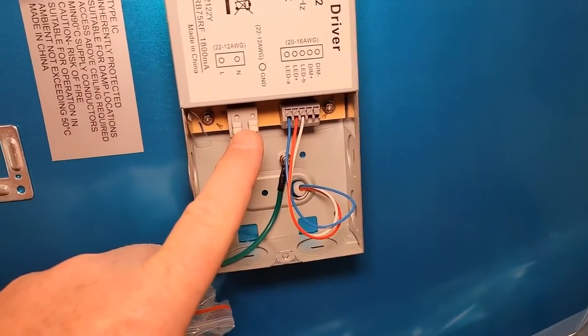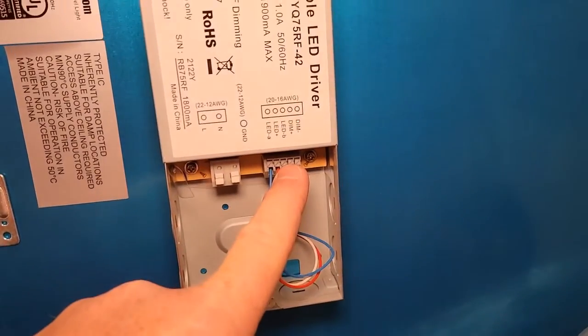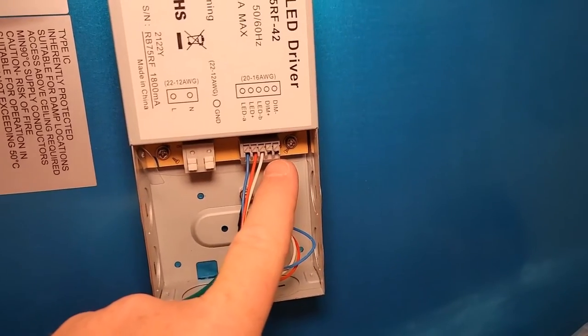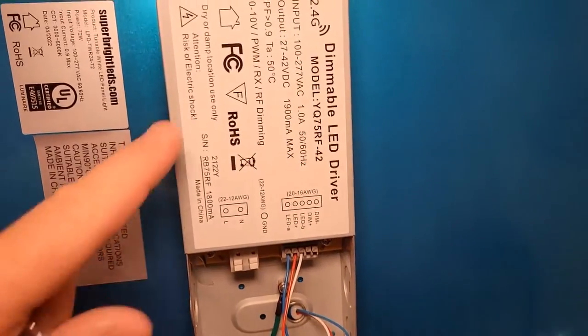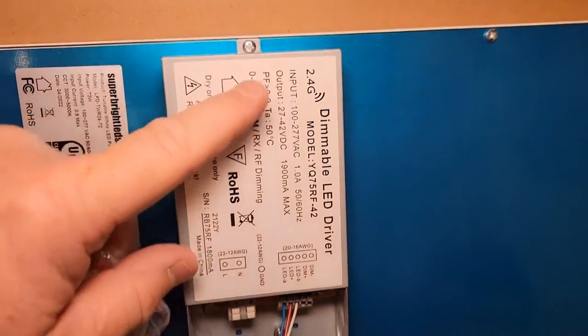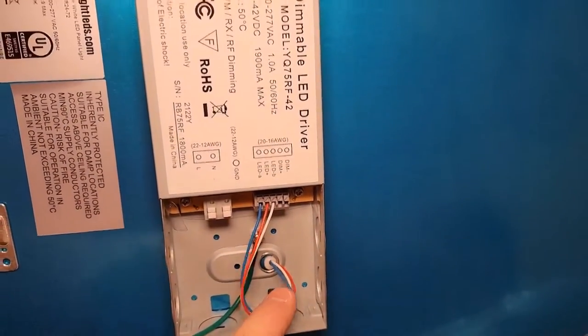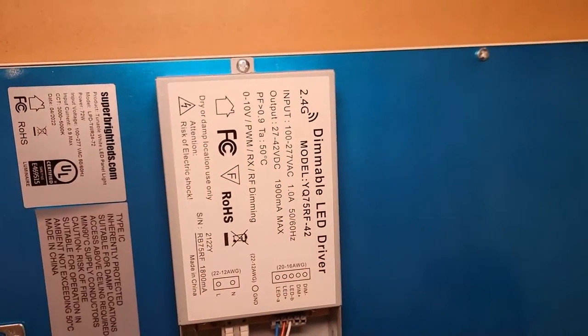You're going to put the extenders in here. If you want to do zero to 10 volt dimming, you're going to put the wires right here. But I've got a remote control that's going to talk to it so I won't have to run the dimming wires to it. It's got 2.4 gigahertz.